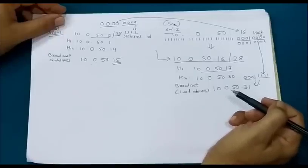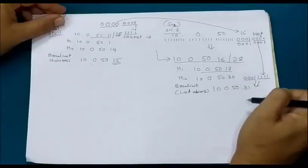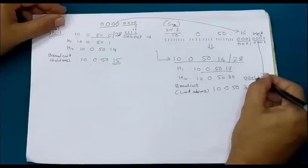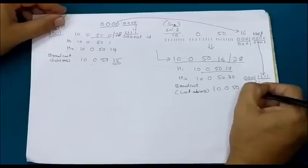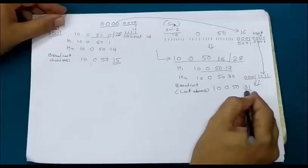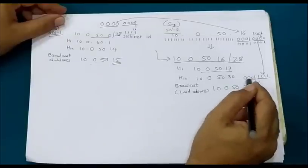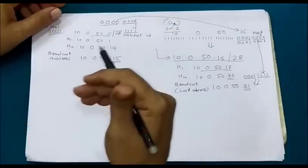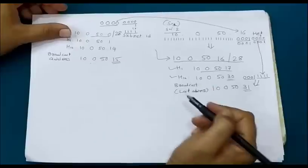Continuing to the last address of subnetwork 2, we set all host ID bits to 1. The bit weightages are 1, 2, 4, 8, 16. Summing: 16+8=24, 24+4=28, 28+2=30, 30+1=31. So 10.0.50.31 is the broadcast address of the second subnetwork. The last possible host address is therefore 10.0.50.30.